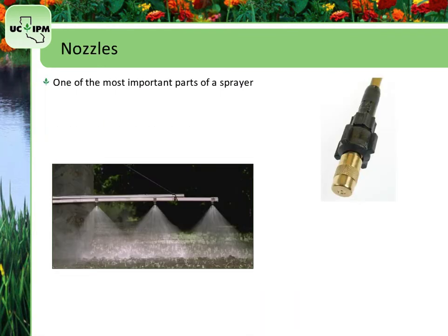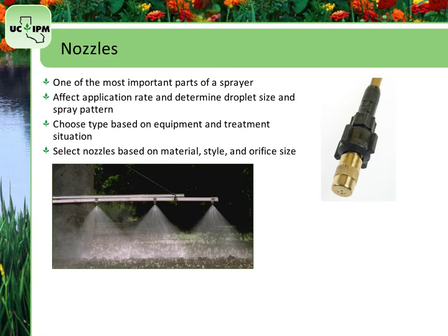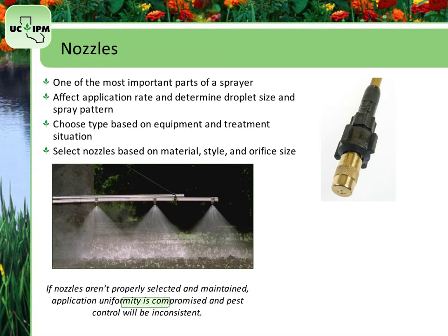Nozzles are one of the most important parts of a sprayer. They affect the application rate and determine the droplet size and spray pattern. There are many different types of nozzles available, and the choice of which one to use depends on the application equipment and treatment situation. It is important to carefully select nozzles based on the type of material the nozzle is made of, the style of nozzle, and the orifice size. If nozzles aren't properly selected and maintained, application uniformity is compromised, and pest control will be inconsistent at best.